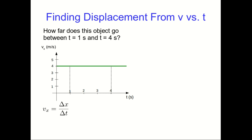You can see from the vx versus t graph that this has a constant x component of velocity. How far in the x direction does this object go between t equals one seconds and t equals four seconds?